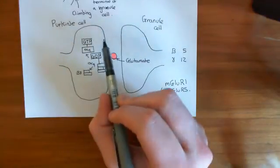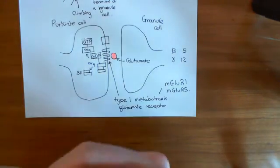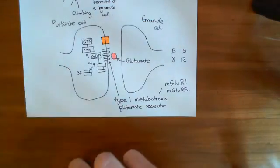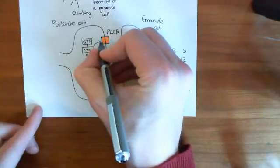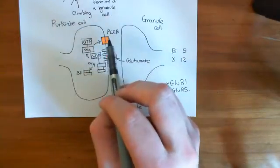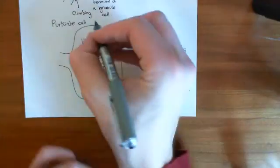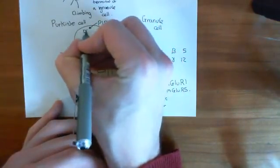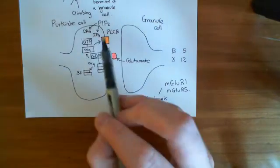Alpha-Q-GTP goes off and activates an enzyme in the cell membrane of the dendritic spine known as phospholipase C. The specific type activated by alpha-Q-GTP is phospholipase C beta. Phospholipase C beta's activity, as seen in previous videos, is to break down a membrane component called PIP2 into diacylglycerol (DAG) and IP3. So at this point, we've created IP3.